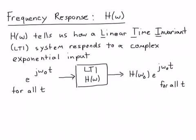What I mean is that if we put in a signal that is a complex exponential, so it's e^(jω₀t) for all time, from minus infinity to plus infinity, if I put that into an LTI system that has frequency response H(ω), then I will get out e^(jω₀t) for all time, but now it's been scaled by a complex number.